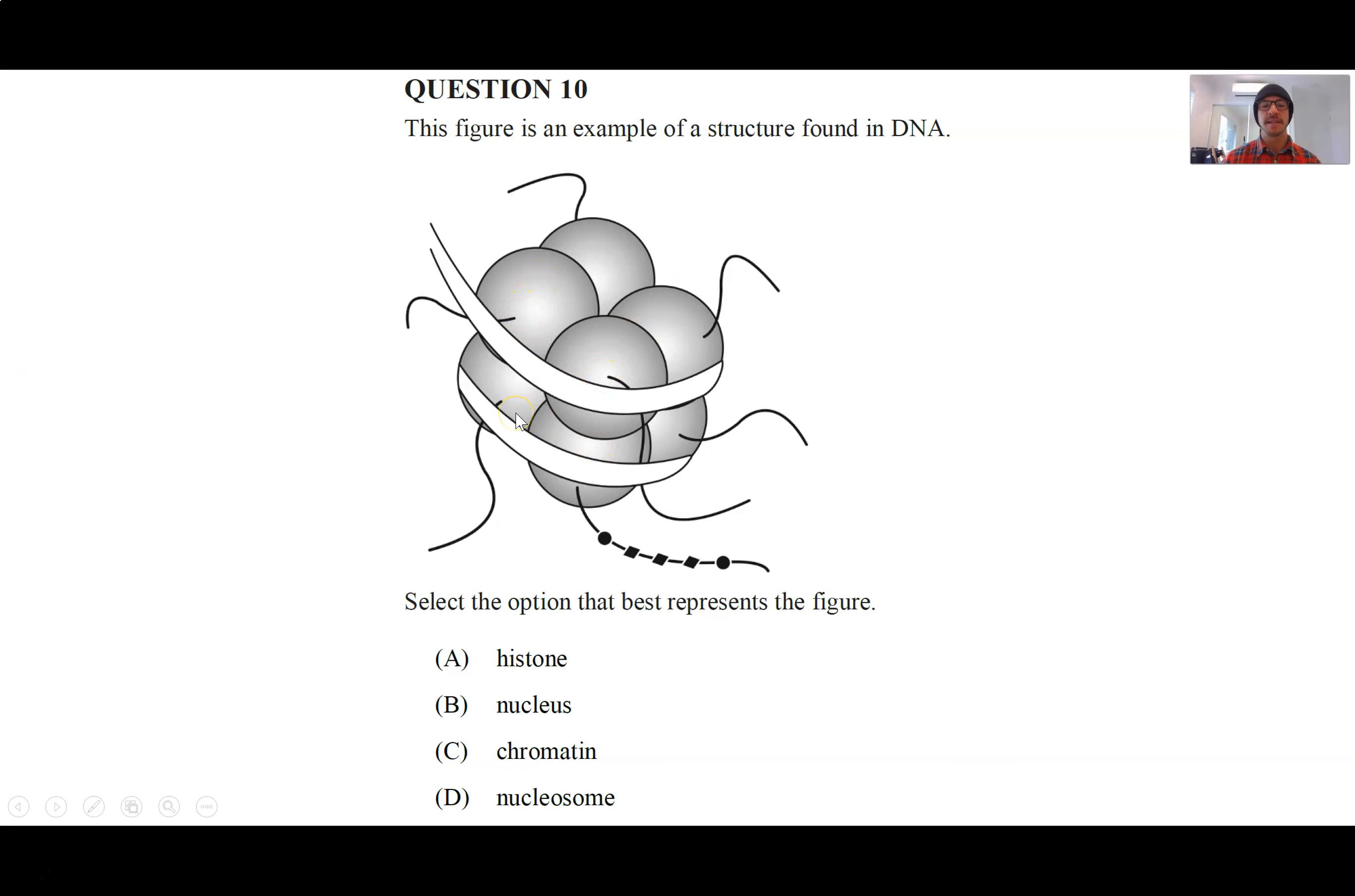So we know what a histone is. That's one of these single proteins. When all eight of them are together, it's called a histone complex. We know that a nucleus is kind of the control center of a cell. It's where DNA is contained, so it's not a nucleus. Chromatin, we said, was this condensed form of DNA before it fully condenses into a chromosome. So therefore, the answer is nucleosome. When DNA is wrapped around this histone complex, the whole thing is called a nucleosome.